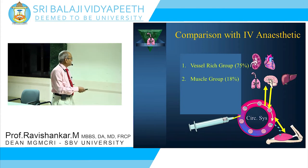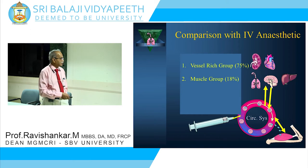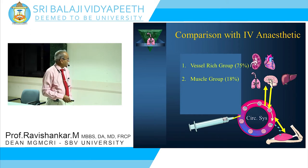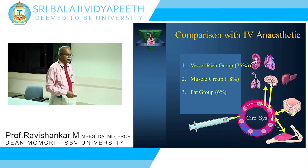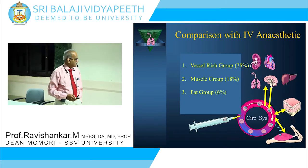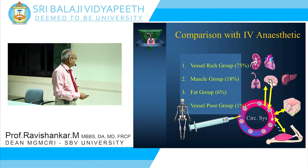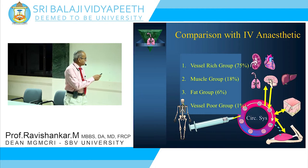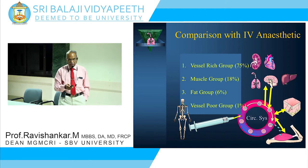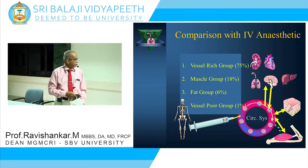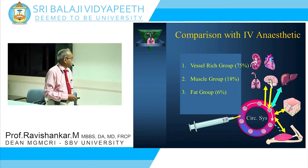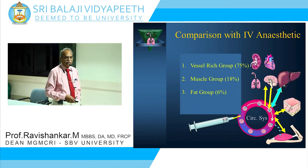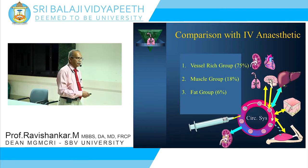In the muscle group, about 18% of the blood goes in. Fat is about 6%, and the vessel-poor group — the skeleton — gets about 1% of blood flow. So the drug gets distributed in all these organs according to blood supply. It is then metabolized by the liver and excreted through the kidneys.